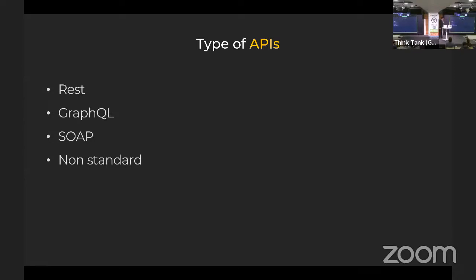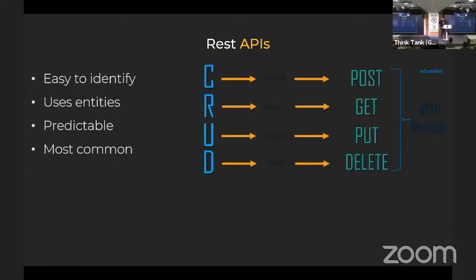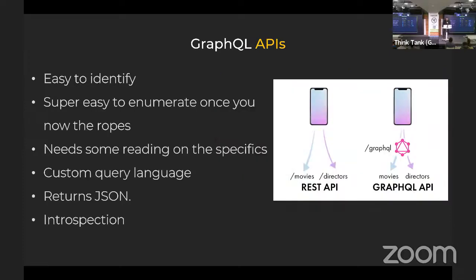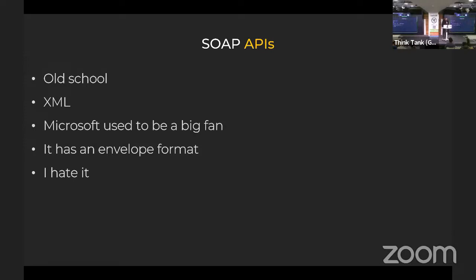The types of APIs I'm going to cover are REST, GraphQL, SOAP, and non-standard. REST APIs are 70% of APIs currently on IoT and the internet in general — they're really easy to identify, they use entities, they're predictable. GraphQL is the new kid on the block — it's Facebook's query language, easy to identify, super easy to enumerate once you know what to look for. It has a custom query language, returns JSON, and if it has introspection enabled, it's an easy win.